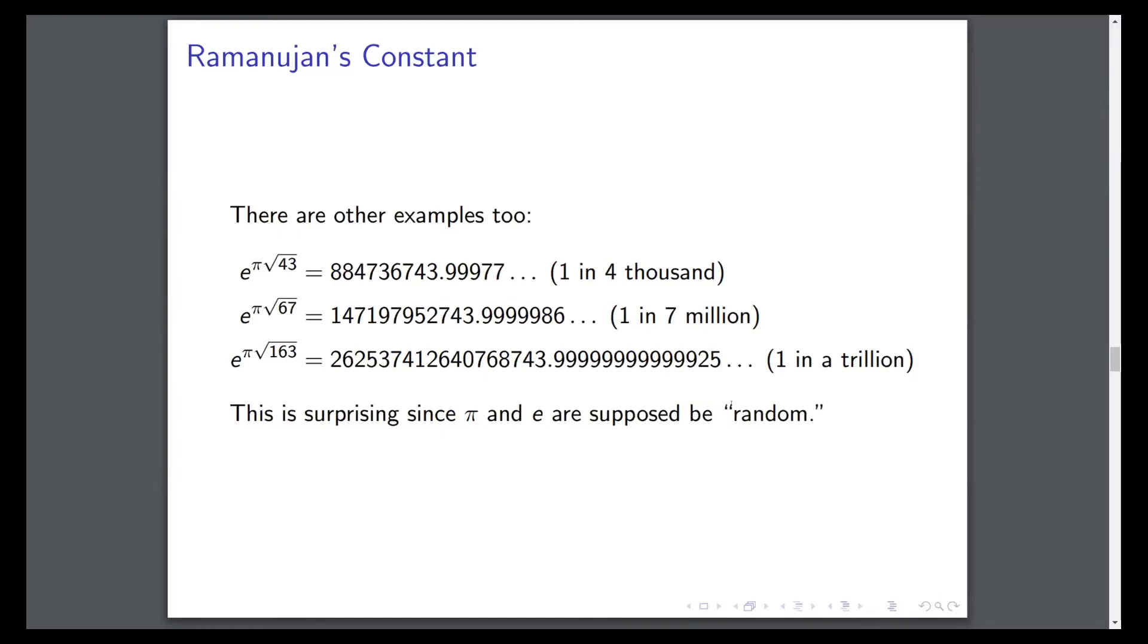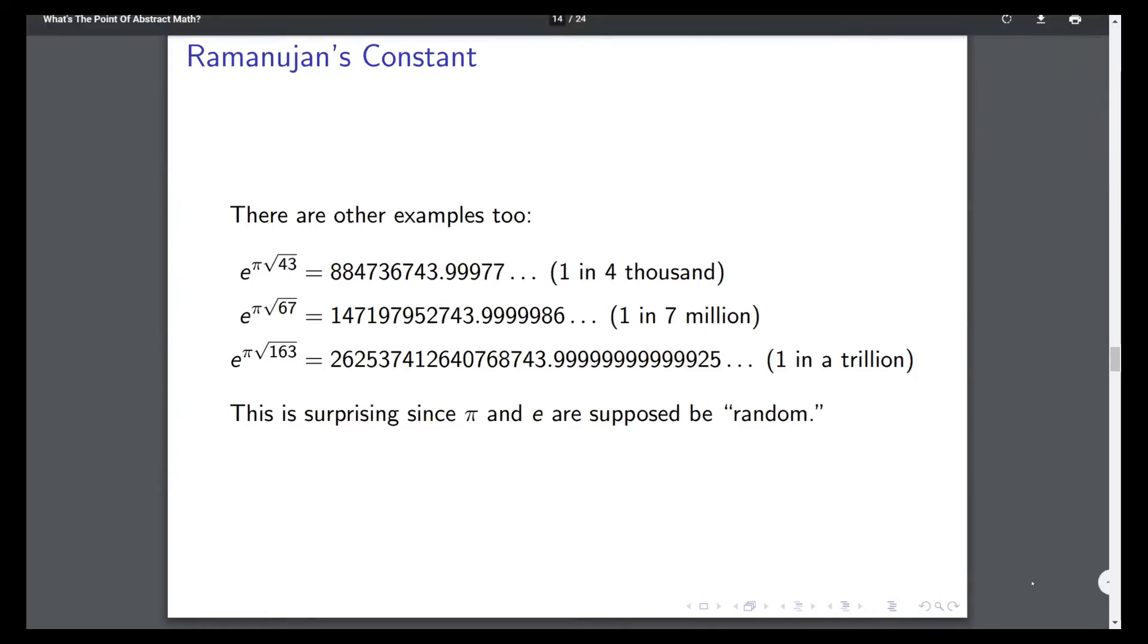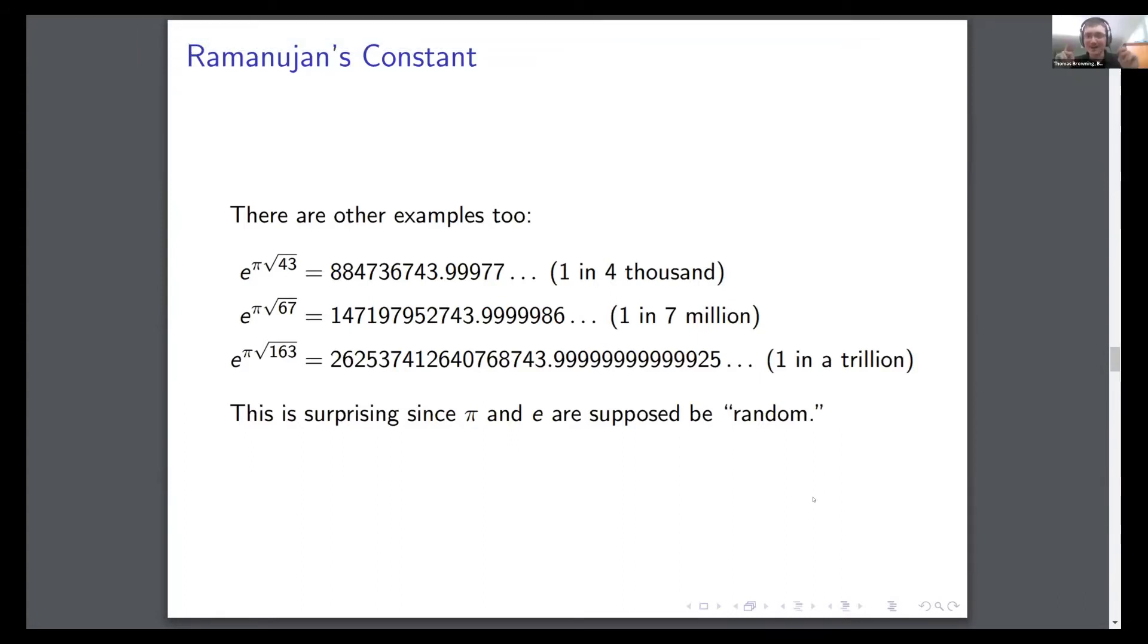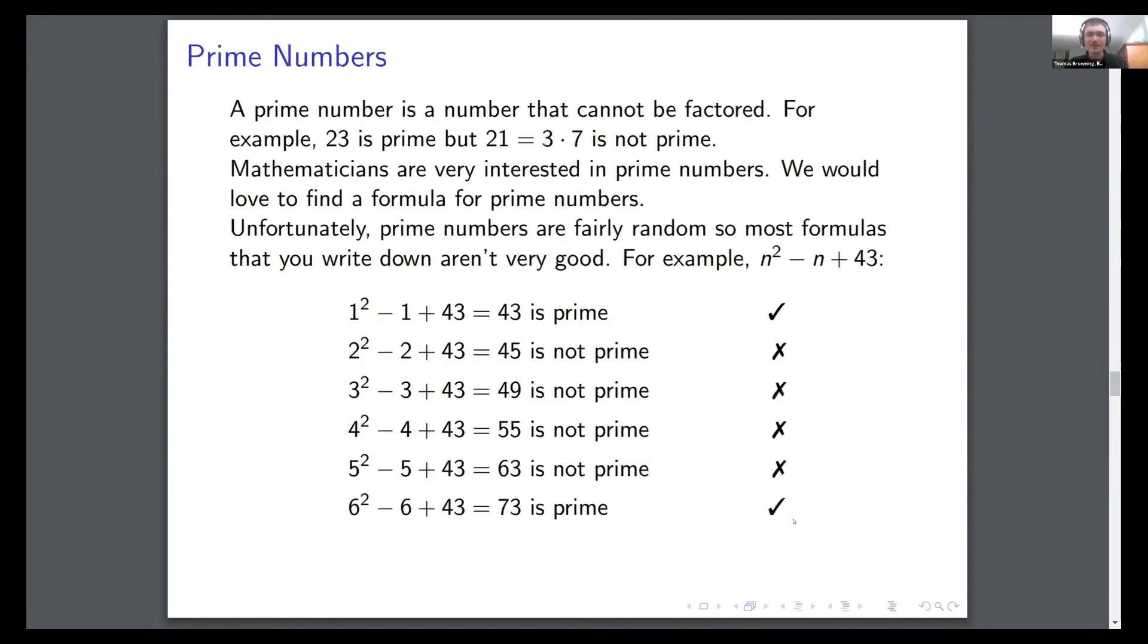If you change the 163 to a 67 or a 43, you get other examples of numbers that are really close to integers. Here's one that's one in 4,000 away from an integer. Here's one that's one in seven million. And then you have the one in a trillion example. The reason this is interesting is because e and pi are supposed to be random, or maybe I should say turbulent. They're supposed to be unpredictable. So it's strange that you should see these patterns appearing.